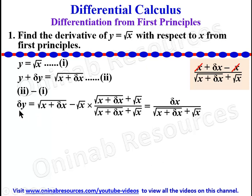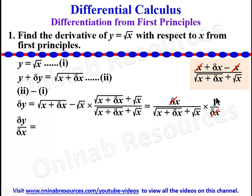The next step is to divide both sides by delta x. So we now have delta y over delta x is equal to multiplying by 1 over delta x, so this delta x will cancel this delta x, and we'll be left with 1 over root x plus delta x plus root x.